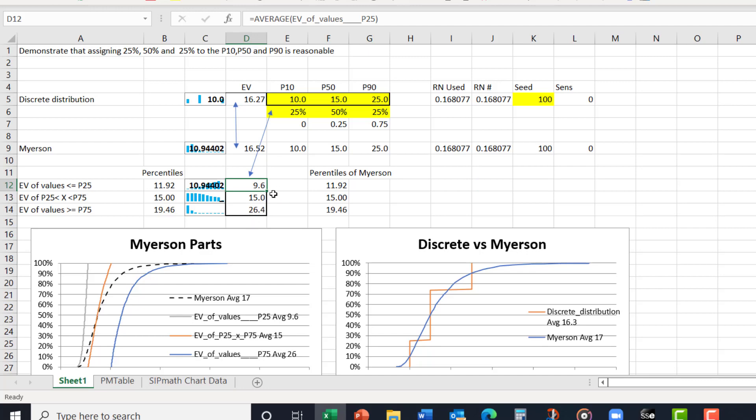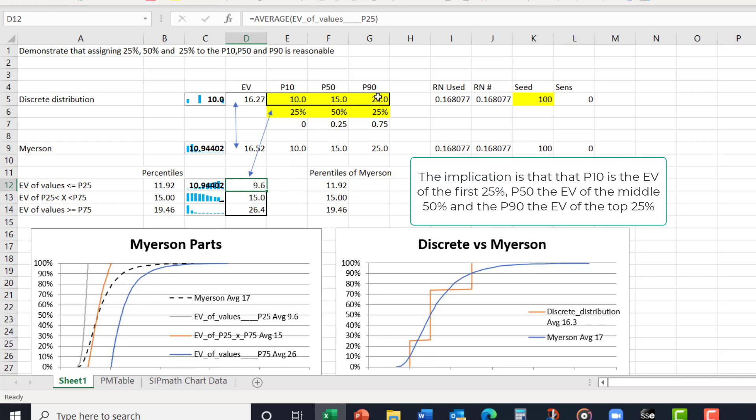And you can see that these numbers here correspond very closely to the numbers up here, the inputs. So 9.6 versus 10, 15 versus 15, and 26.4 versus 25.